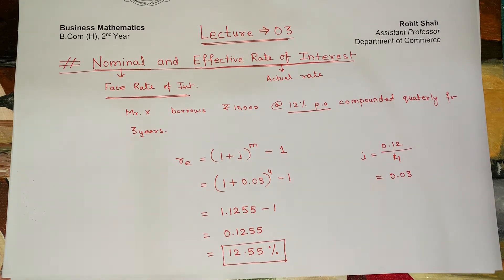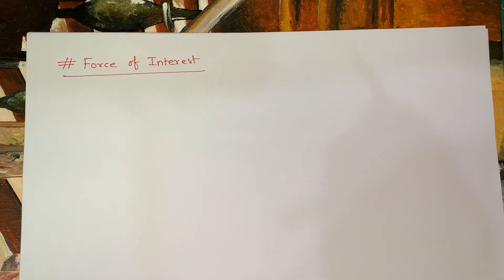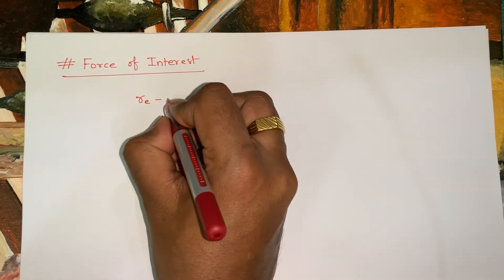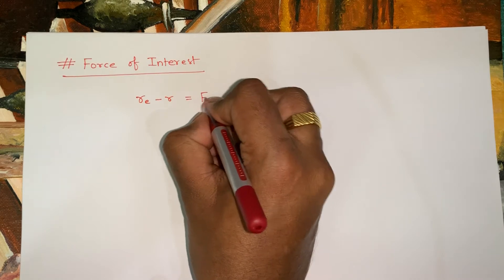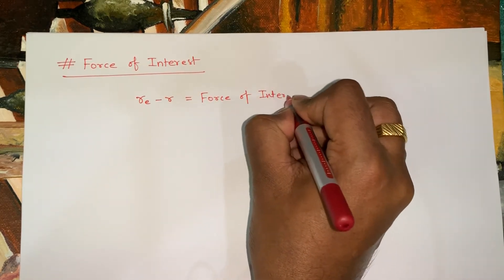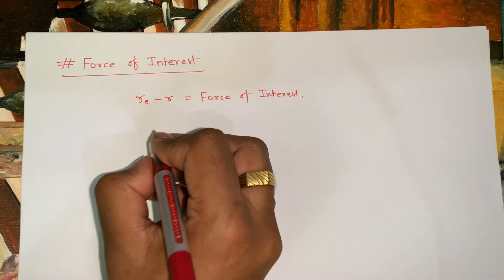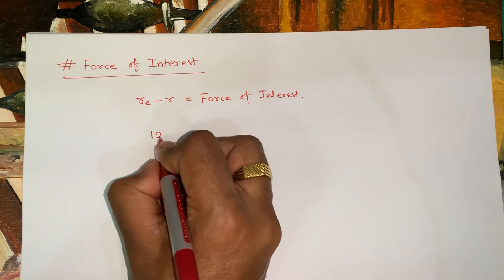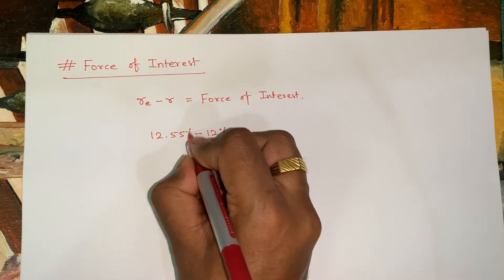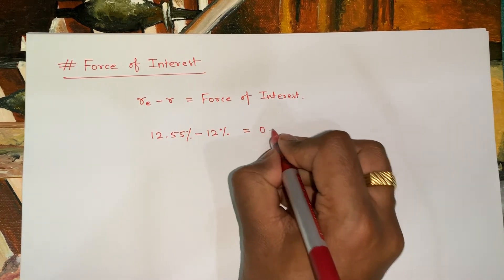The reason behind this is the force of interest. What is force of interest? Force of interest is the difference between the effective rate of interest and the nominal rate of interest, so RE − R = force of interest. In the previous case, the force of interest was 12.55% − 12% = 0.55%.